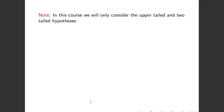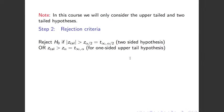For this course, we will only consider the upper-tailed and the two-tailed test, so you don't have to worry about the lower-tailed test. Step two is the rejection criterion. For a two-sided test, the absolute value of the test statistic should be greater than z alpha over two. We're going to use the z-test. For a one-sided upper-tailed test, the rejection criterion is z test statistic greater than z alpha to reject H0.